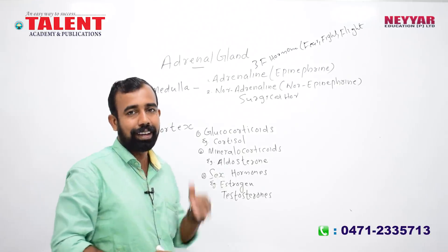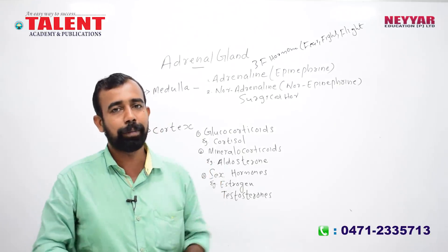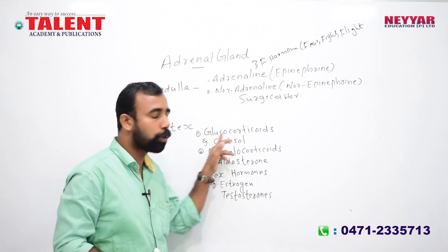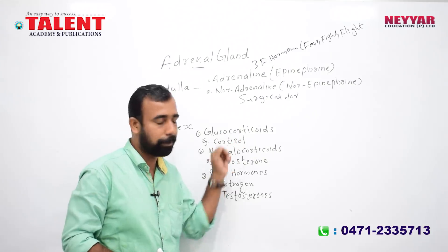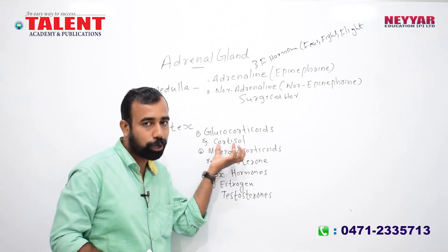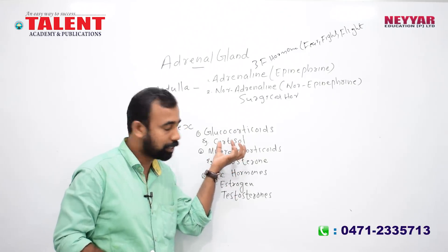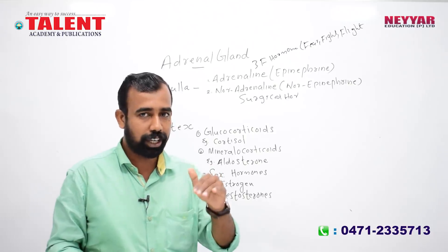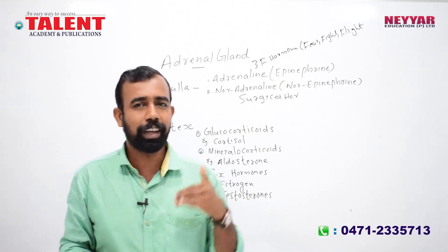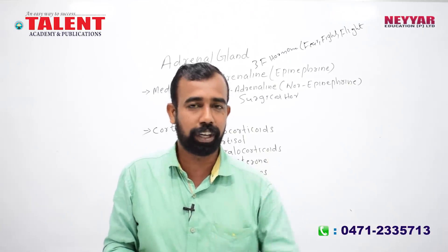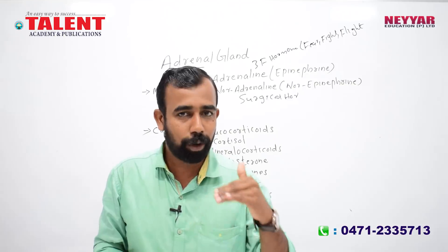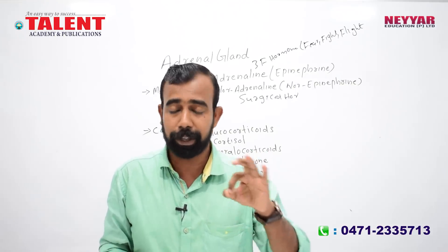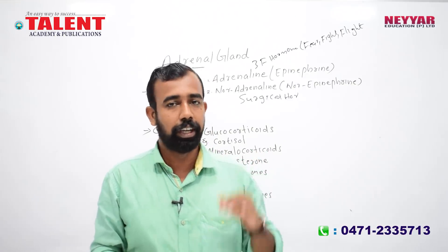In the first group, glucocorticoids deal with carbohydrate metabolism. An example of glucocorticoids is cortisol. The first function of cortisol is that in our body, protein and fat are converted to glucose — this process is gluconeogenesis. These are the glucocorticoid functions.